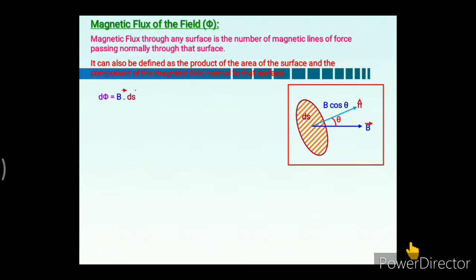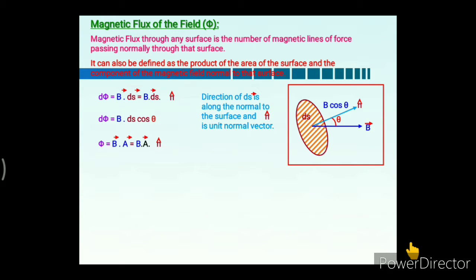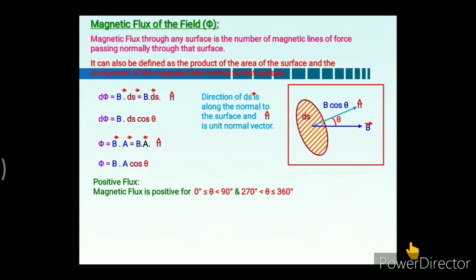The mathematical expression for magnetic flux is given as phi equals vector B dot vector A, and hence magnetic flux through any surface is given as B·A·cos(θ), where B and A are the magnitudes of the magnetic field of induction and area respectively. Positive flux is obtained when the angle theta between vector B and vector A is between 0 to 90 degrees or between 270 to 360 degrees.